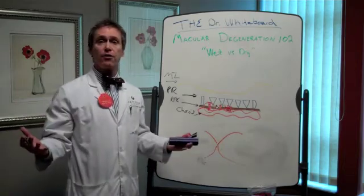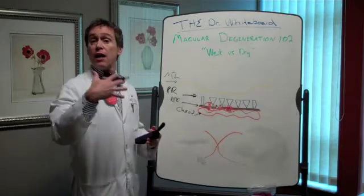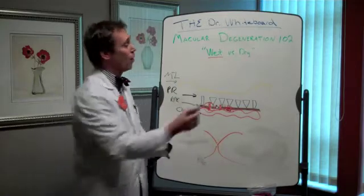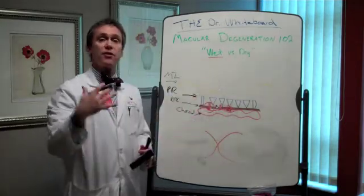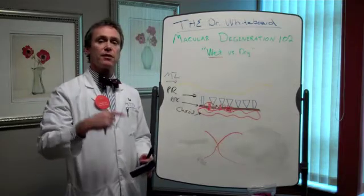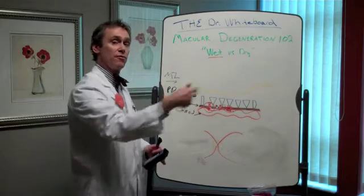When we think about macular degeneration, the first thing that I, as an eye doctor, think about is, if it's there, what kind? Is it wet? Is there bleeding? Or is it dry? Is there something going on with the retinal pigmented epithelium or RPE that might cause vision loss?